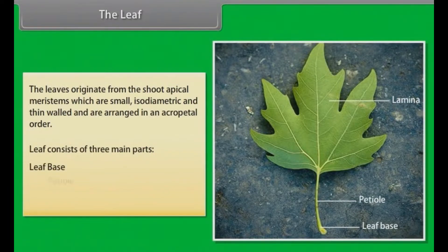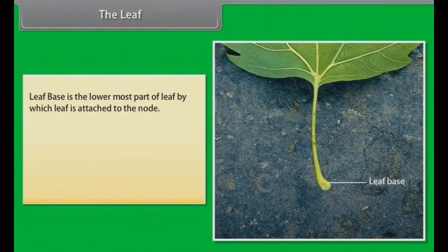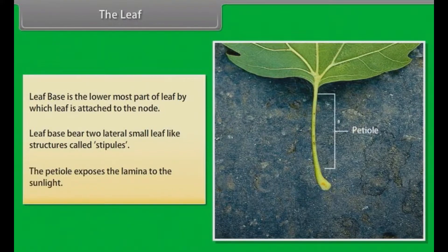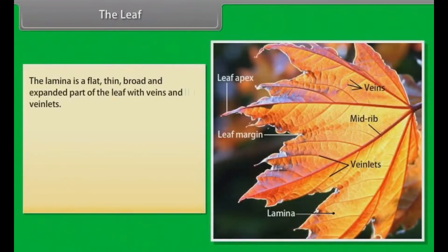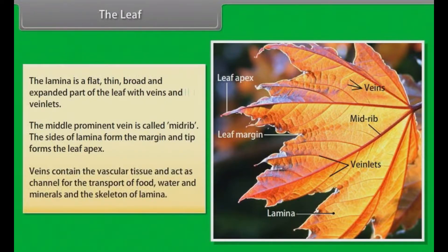The leaf consists of three main parts: leaf base, petiole, and lamina. Leaf base is the lowermost part of the leaf by which the leaf is attached to the node. Leaf base bears two lateral small leaf-like structures called stipules. The petiole exposes the lamina to the sunlight. The lamina is a flat, thin, broad and expanded part of the leaf with veins and veinlets. The middle prominent vein is called the mid-rib. The sides of the lamina form the margin and the tip forms the leaf apex. Veins contain the vascular tissue and act as channels for the transport of food, water and minerals, and as the skeleton of the lamina.